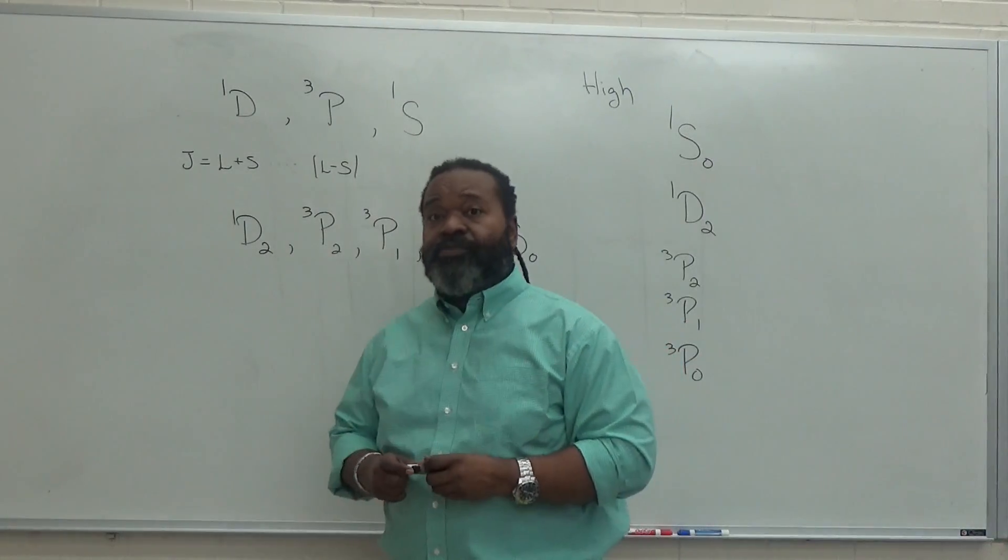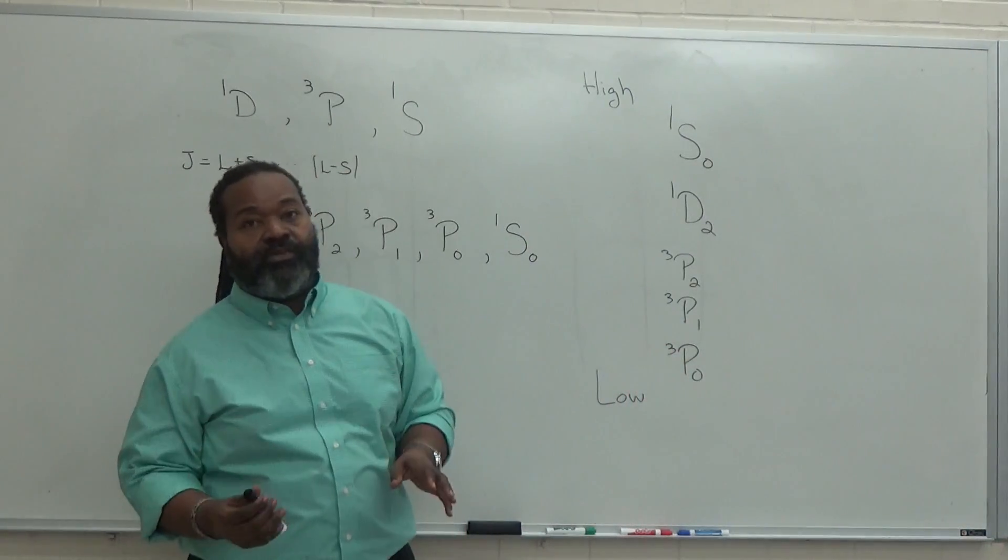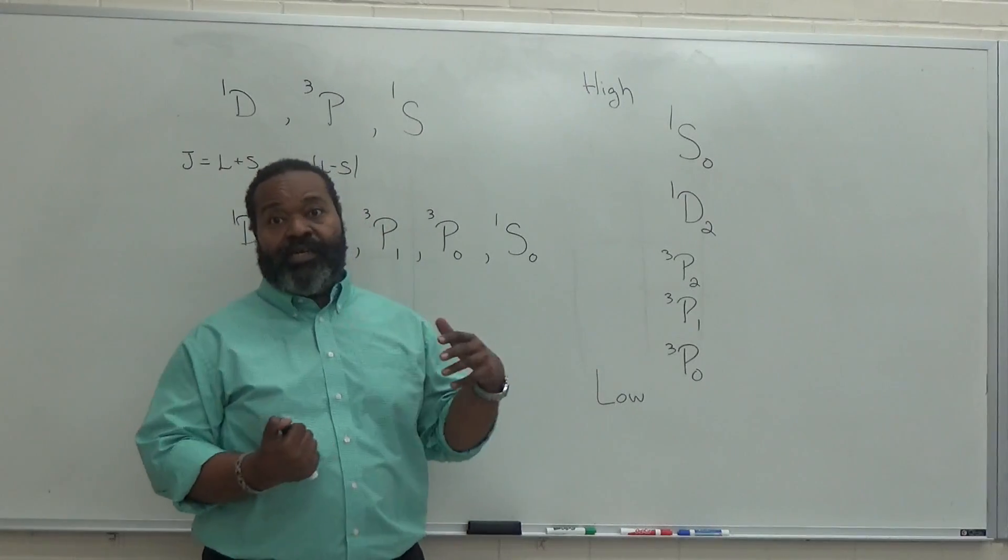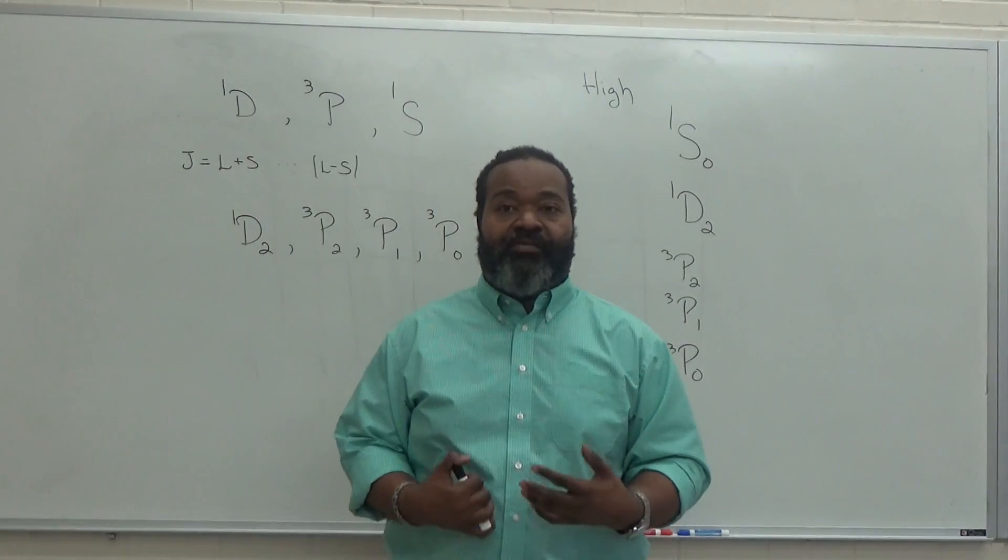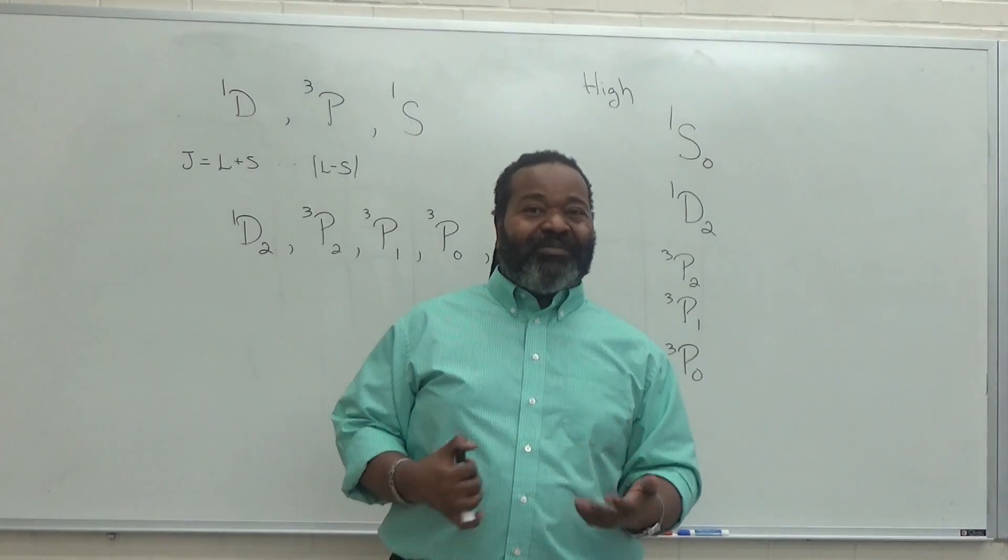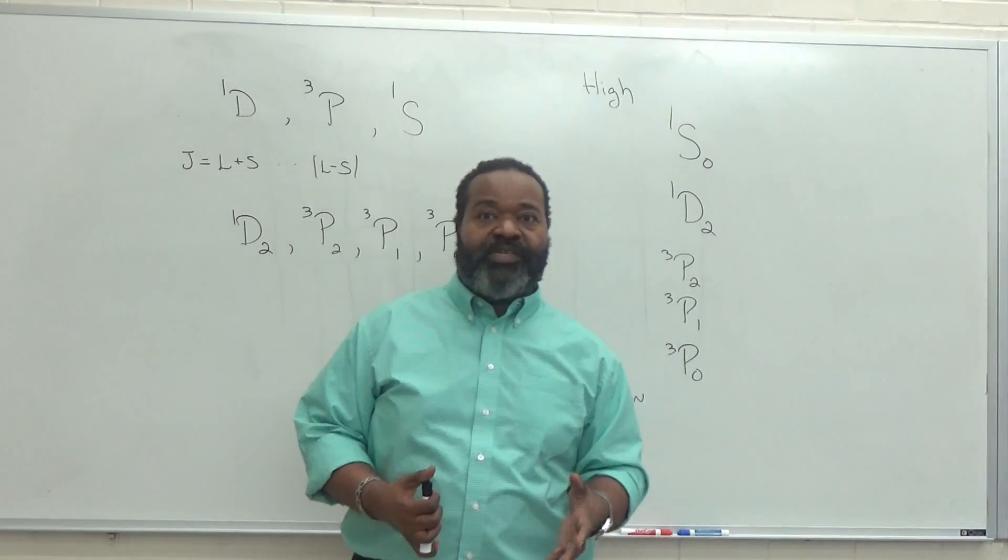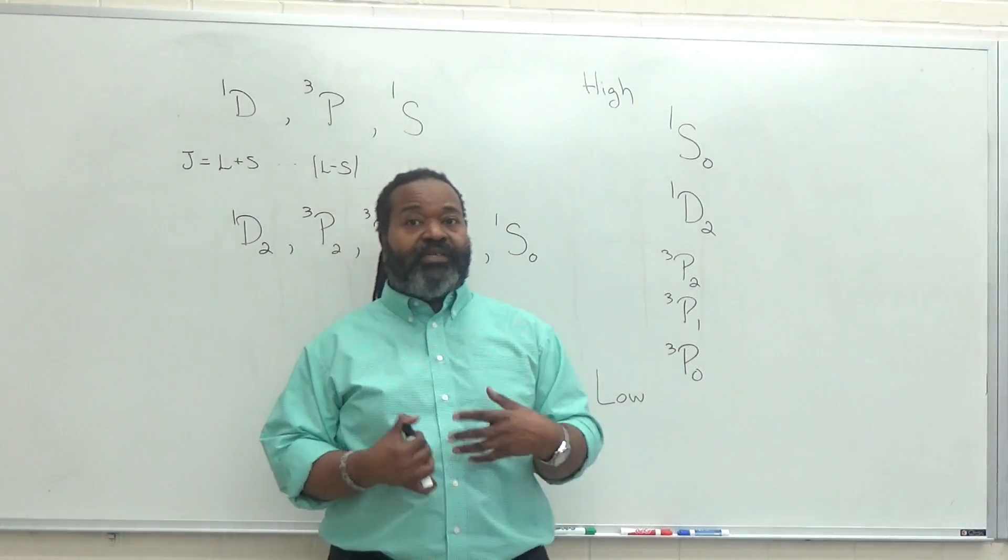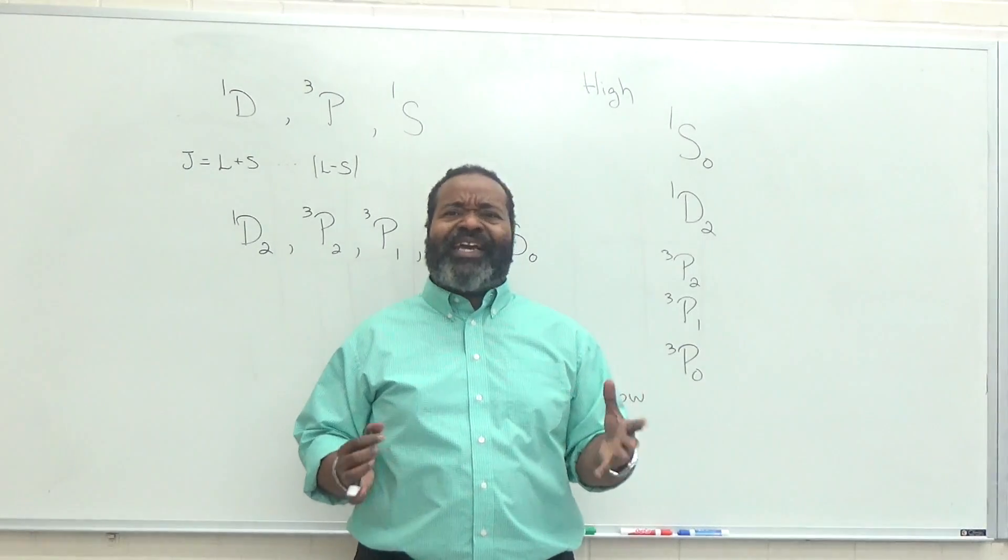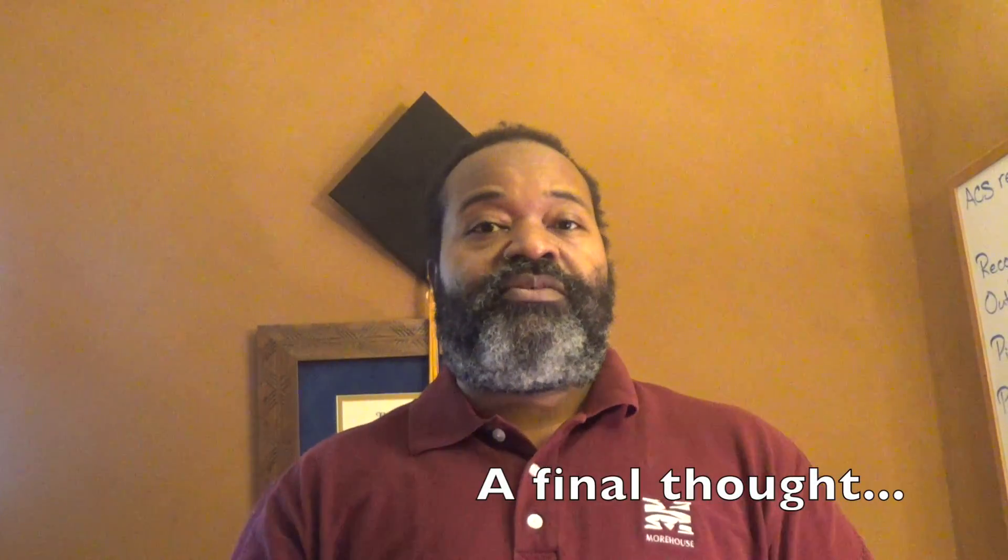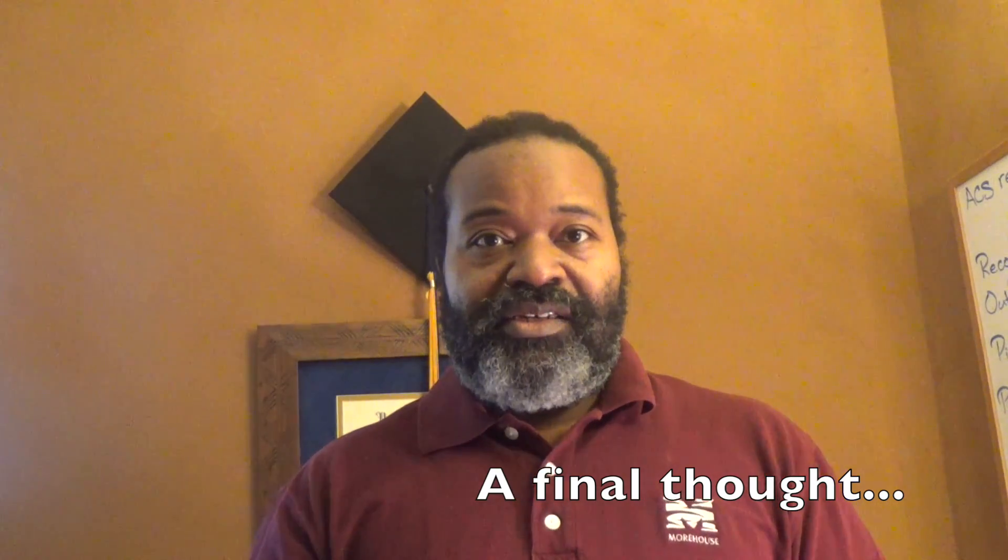And that completes the full microstates method. Now it's important to know that this is the theory. Experimental determinations can be done and will sometimes give a different order than what's predicted. What's important is that we understand the principles and the rules behind how this is supposed to work. The full microstates method can be lengthy, it can be involved, and it uses a lot of bookkeeping. But I figured it would be important to show the full method as a way of comparing against the other videos that have the shorter method that's useful for most ground state configurations.